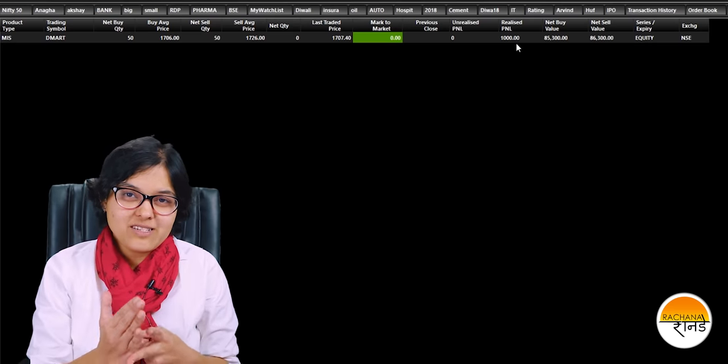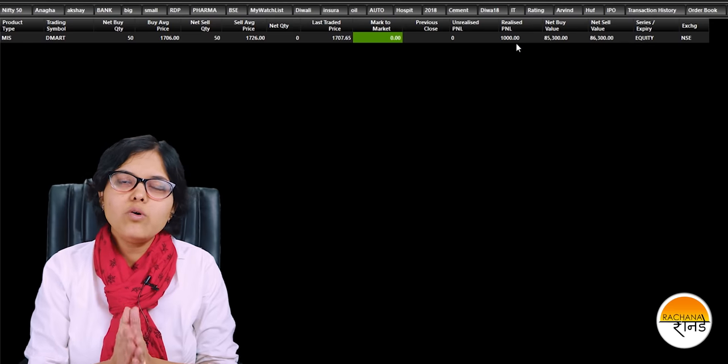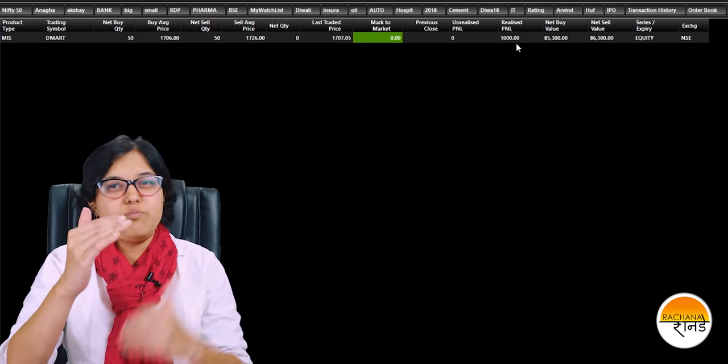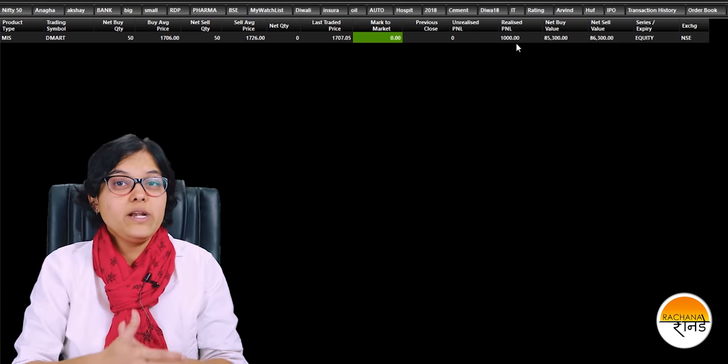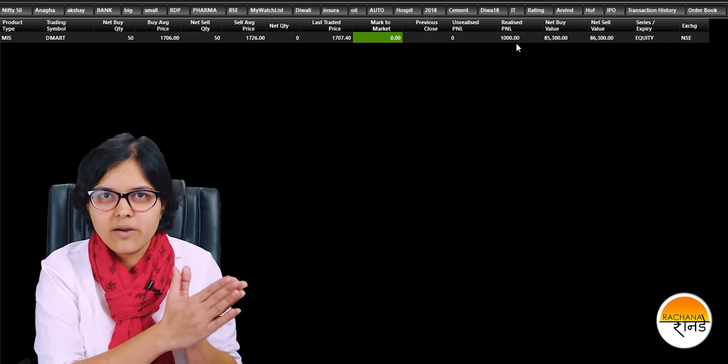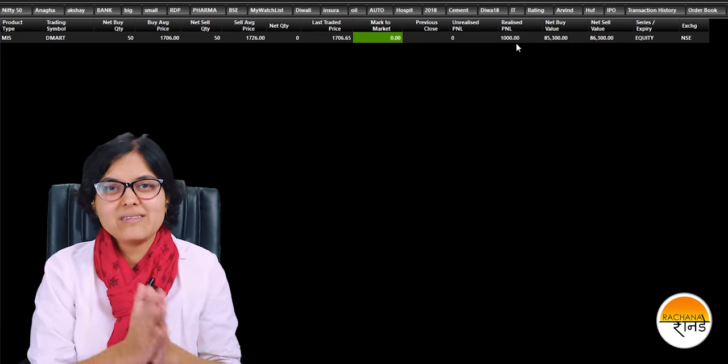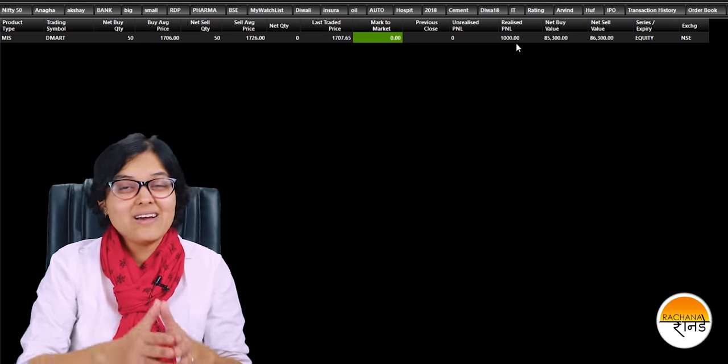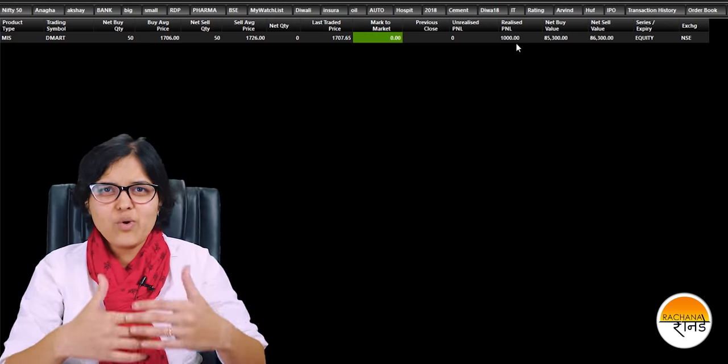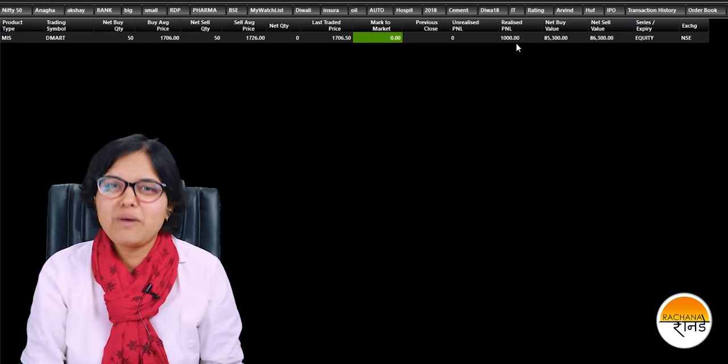Today we talked about support, we talked about resistance, we talked about using a basic strategy for support and resistance. Please be sure don't buy or don't sell just because it has crossed or it has breached the support or resistance level. You need to check a lot more parameters and then take an informed decision to take a trade. I hope you have understood this. That's it from my side. Consider subscribing to my channel, consider sharing this video with your friends. All the links are always there in the description box. That's it. Jai Hind. Bye-bye.